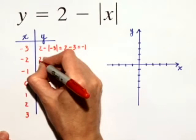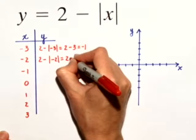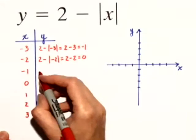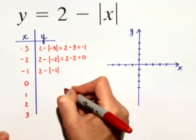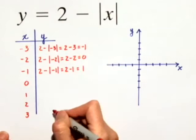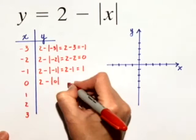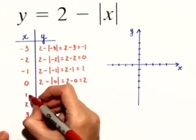We're going to do that with these other values for x. When x is negative 2, y equals 2 minus the absolute value of negative 2, which gives us 2 minus 2, or 0. When x is negative 1, we get 2 minus the absolute value of negative 1, which is 1. When x is 0, y equals 2 minus the absolute value of 0, which is just 2 minus 0, or 2.